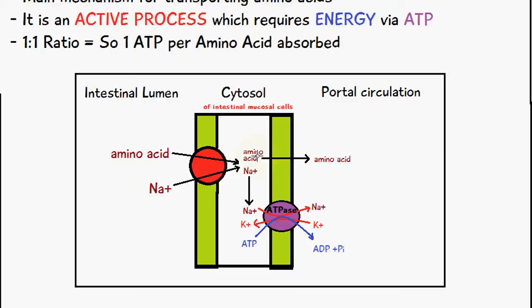The cytosol of the intestinal mucosa, and then the amino acid from here can diffuse down its concentration gradient into the portal circulation.